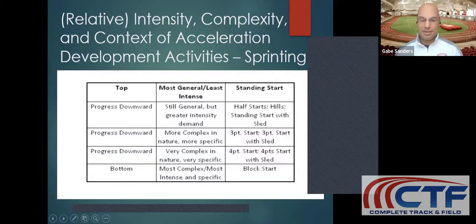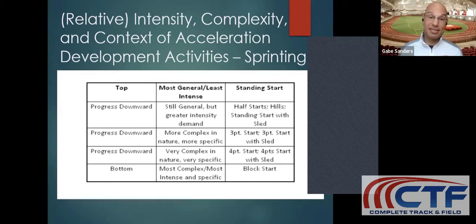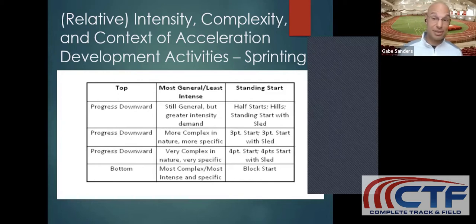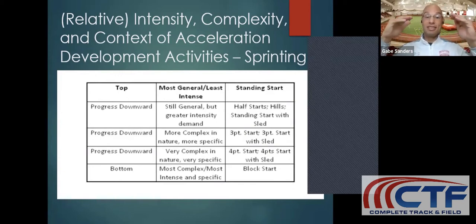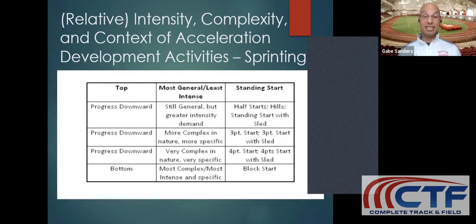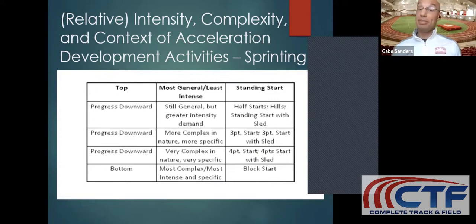This is from an article I wrote a few years ago, but it's tried and true today. Looking at things from the top down — this is an example of developing acceleration and looking at the complexity and context of an activity. If you want to start with acceleration, you start with something at the top that's really general and the least intense on the intensity spectrum: just a standing start, simply standing there and pushing. Then we can progress downward. We're still general but a little more intense — we could add a sled, push a prowler, or accelerate up a hill.